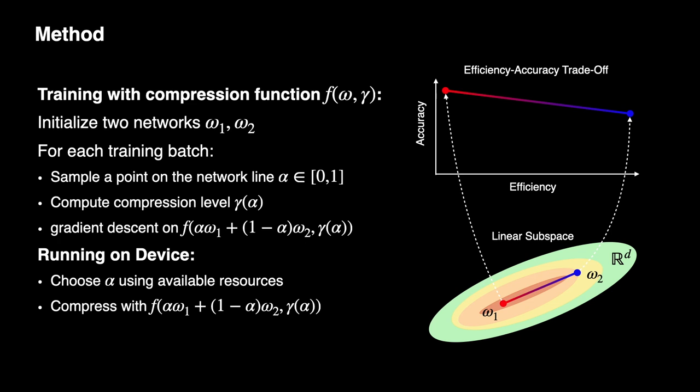More specifically, the linear subspace is defined as a convex combination of the two endpoints. Each point along the line specifies a certain compression factor, which determines how much to compress a model at that given point. We consider three forms of compression: unstructured sparsity, structured sparsity, and quantization. F of omega gamma denotes a model with architecture omega, compressive factor gamma, using compression method F.